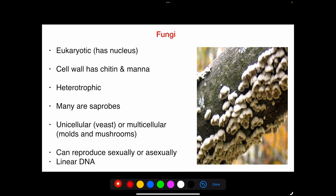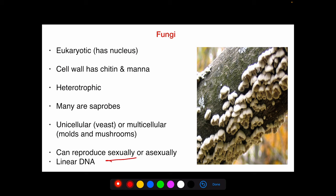Fungi are eukaryotic cells — they have a nucleus. Their cell wall contains chitin and mannan, which are important in the diagnosis of fungal infections. They are heterotrophic, and most are saprotrophic, meaning they live off decaying or dead matter. Fungi can be unicellular (e.g., yeast) or multicellular (e.g., molds and mushrooms). They can reproduce either sexually or asexually, and their DNA is linear.